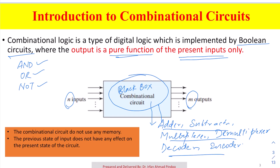Whenever we are giving some input — let us suppose we have three inputs A, B, C and two outputs: sum and carry, in the case of an adder. So if we are giving input as 1, 1, 0, then the sum will be 0 and carry will be 1. If you don't know how it comes, you will need to wait for the upcoming classes.